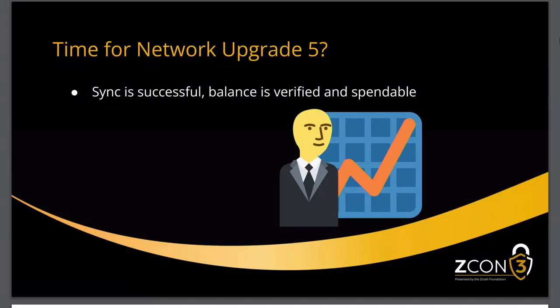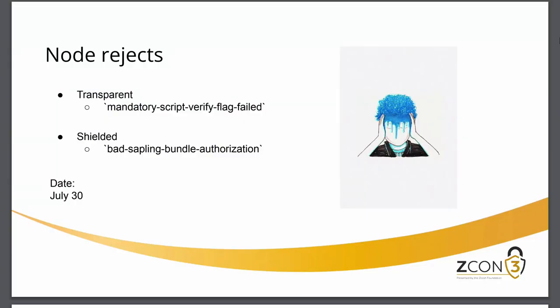The wallet reported sync successful. We can see the balance, we can see that it's spendable — we have an even playing field to test transactions with testnet tokens. But another obstacle appeared: the node started rejecting our transactions, both transparent and shielded.